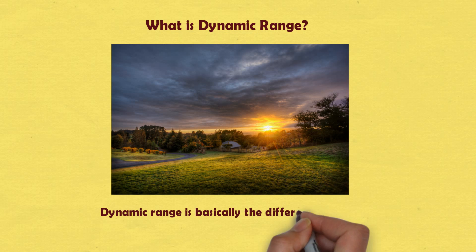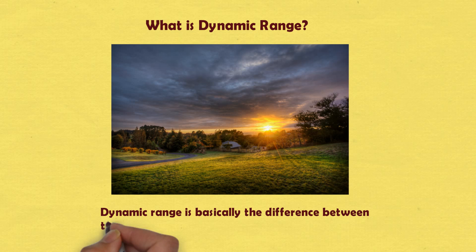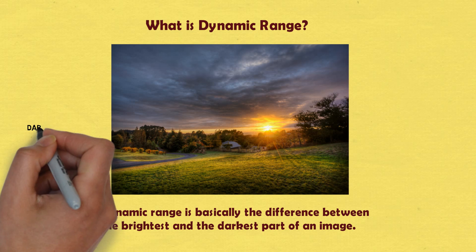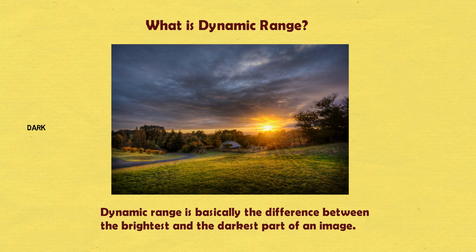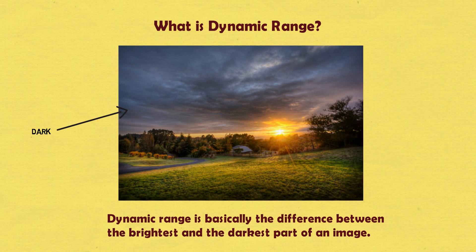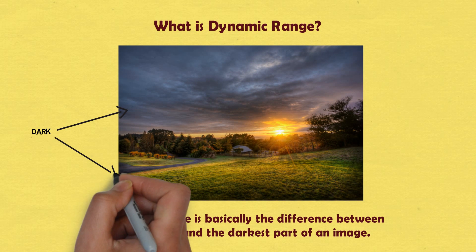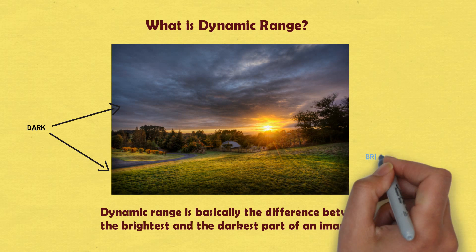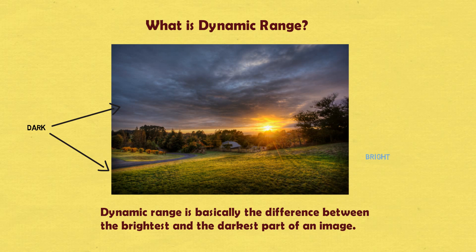You must have realized at times when you click a photograph, you see the dark areas to be much darker and bright areas to be extensively brighter. Therefore, you cannot see much details in the photograph taken. That means there was very less information present in the photograph. This happens due to underexposure and overexposure of the picture.